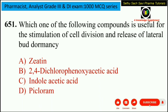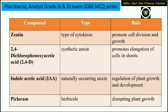First question of the day: which one of the following compounds is useful for the stimulation of cell division and the release of lateral bud dormancy? The options are zeatin, 2,4-D (that is 2,4-dichlorophenoxyacetic acid), indoleacetic acid, or picloram. Now zeatin is a type of cytokinin. The main function of cytokinins is to help in cell division and growth as well as lateral growth.